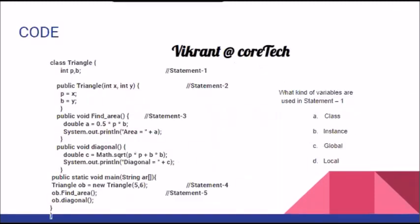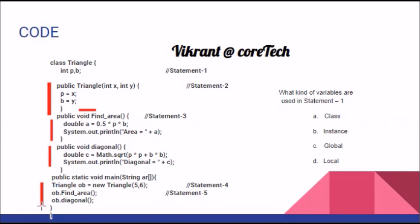Let us learn to divide the code. The name of the class and the function are the same, so this is a constructor. This is the function findArea, which is void. We must underline these categories of things in the paper — that will make it easy for us. The correct option is a void function, once again named as diagonal. It is calculating the diagonal using the formula given, and this is the main driver function: public static void main.